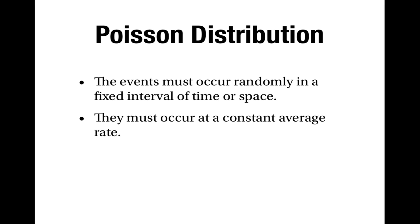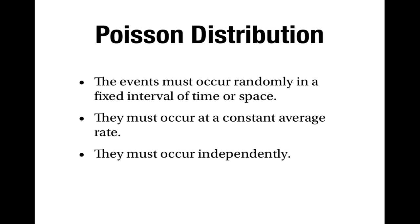Or again, if we divide the interval into sub-intervals, the number of events that you would expect to happen in each sub-interval is proportional to the size of the sub-interval. Thirdly, the events must occur independently. And fourthly, they must occur one at a time.